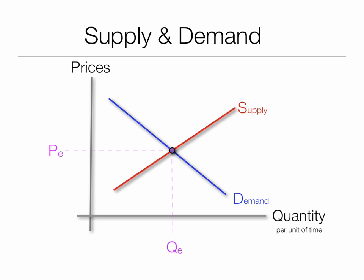The typical supply and demand curves look like this. We have supply in red, demand in blue, and we have equilibrium in purple. The purple price and the purple Q represent quantity.